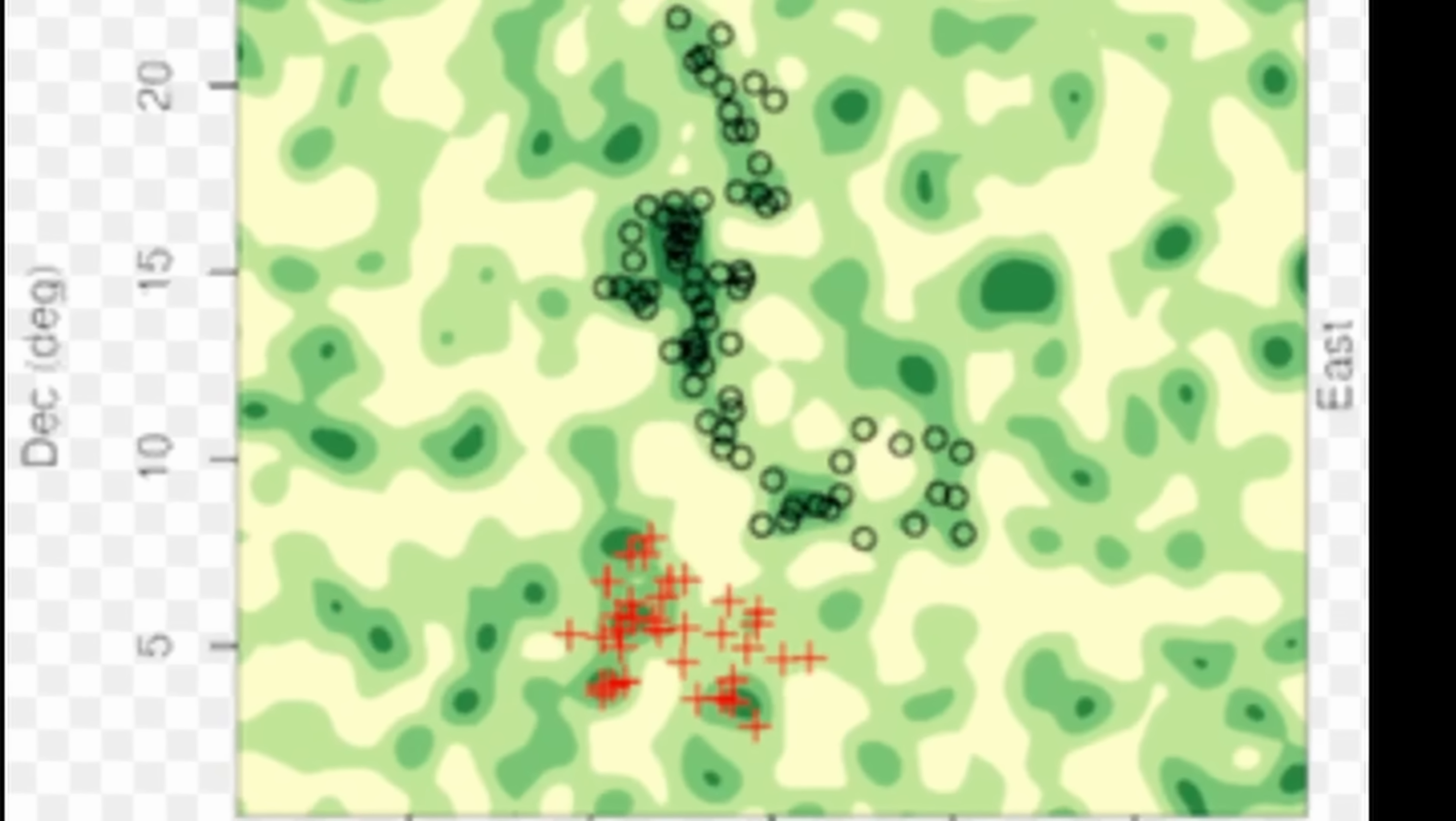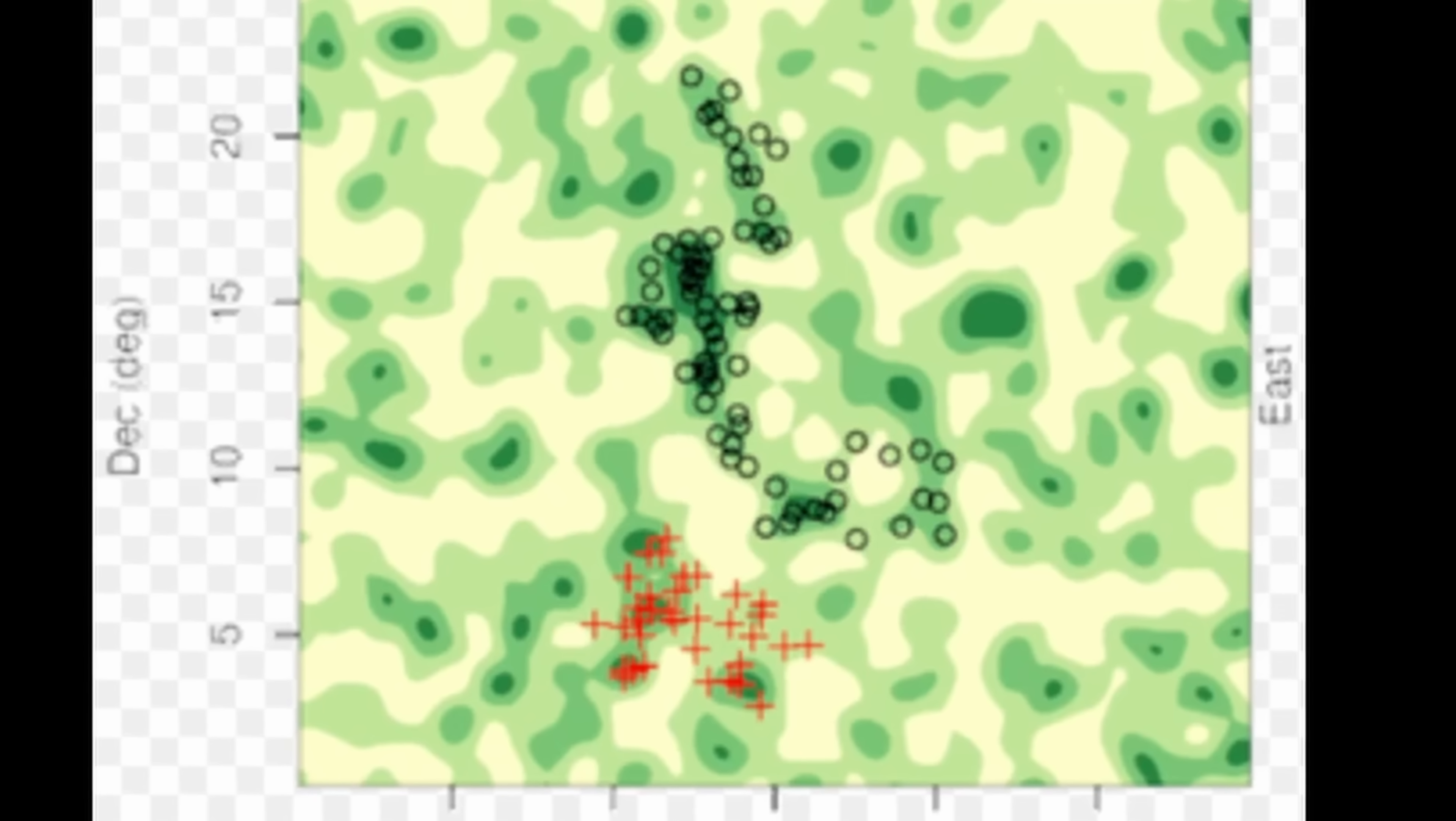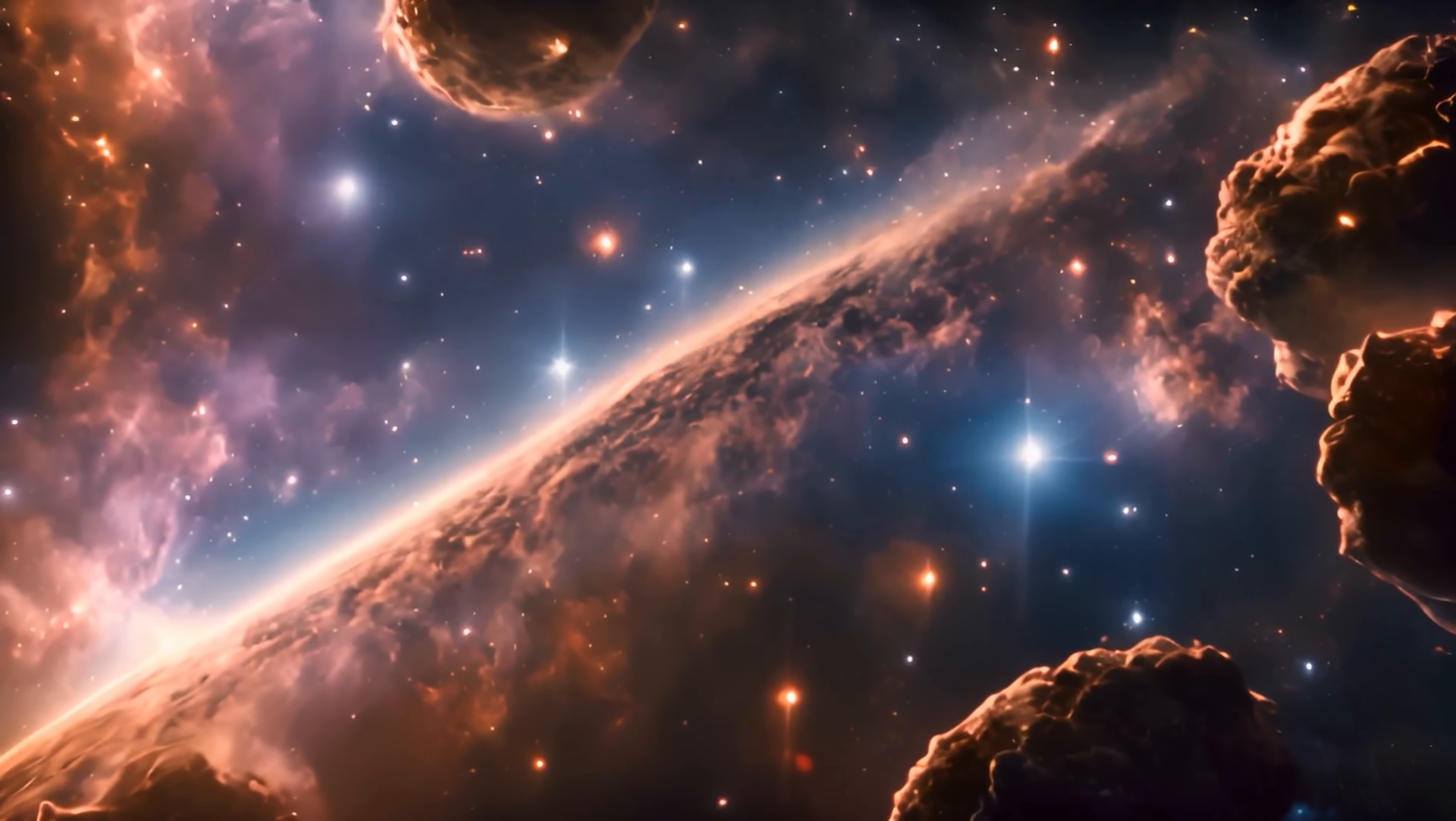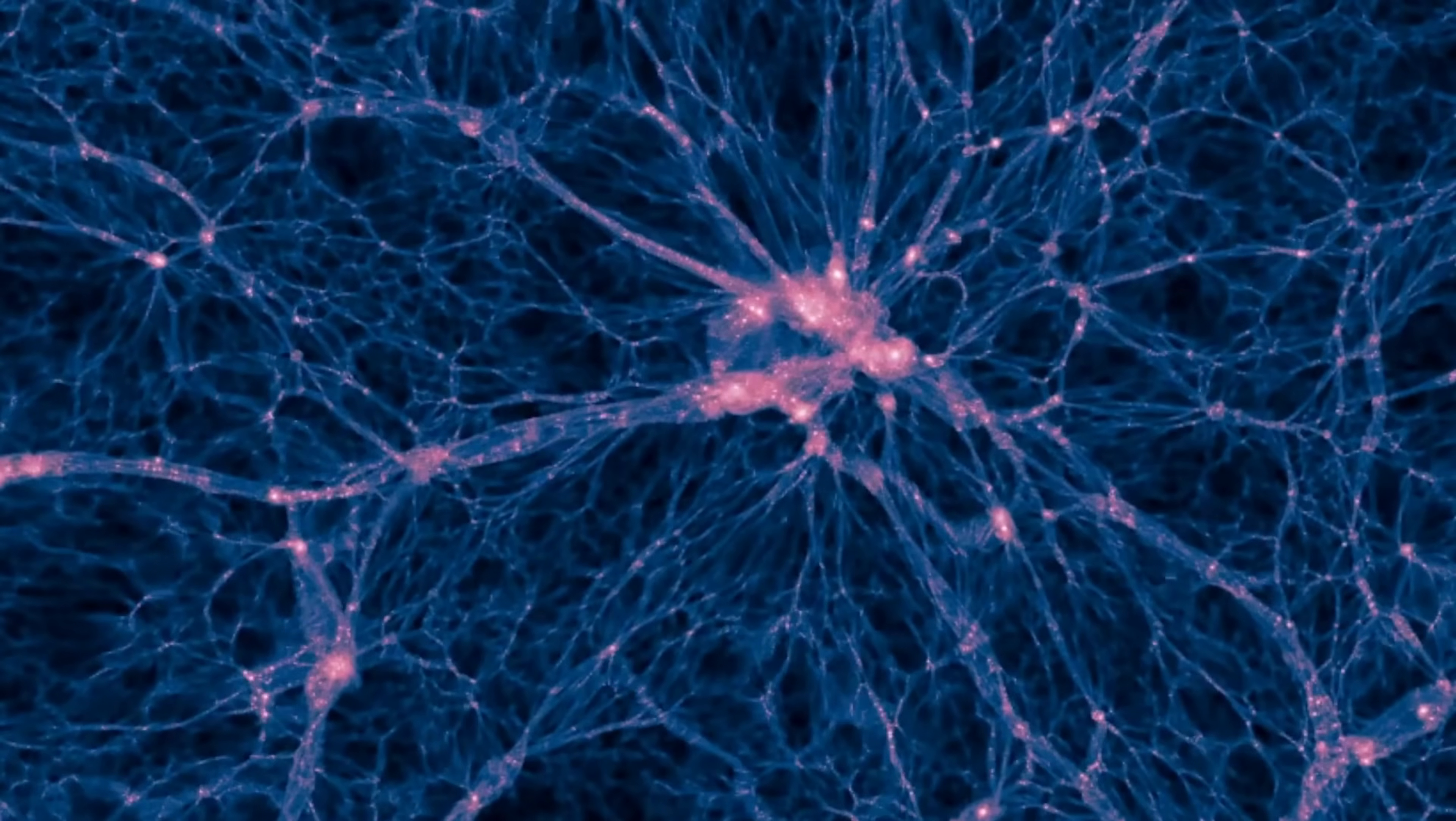And the first such discovery was in 2013 of the large quasar group, also known as U1.27. It seems to contain 73 quasars in it, and it seems to be almost 4 billion light-years across. But essentially represents one of these filaments actively forming in the early universe.